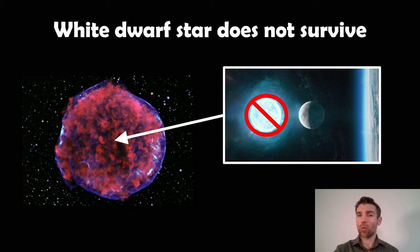When you get a type 1a, the white dwarf star typically does not survive. Because the whole star is the same temperature when it goes supernova, the whole star is destroyed, so you don't get anything left over generally from a type 1a.